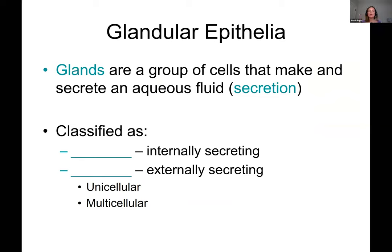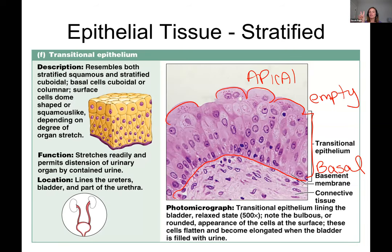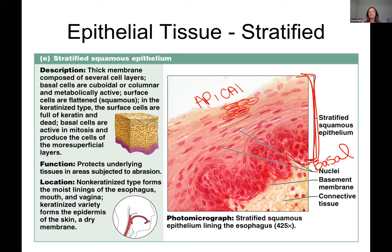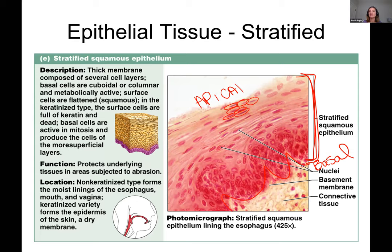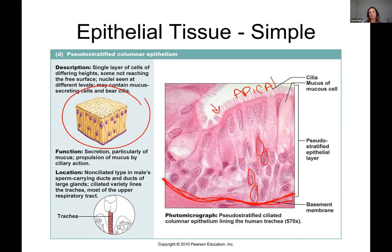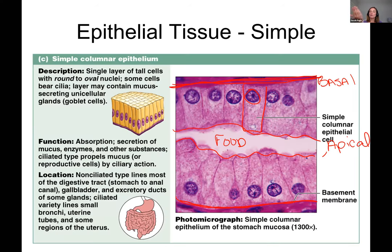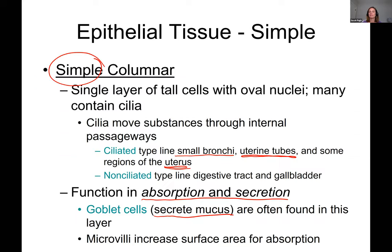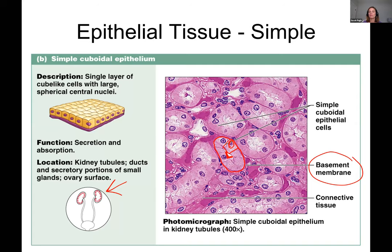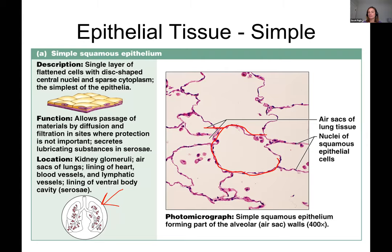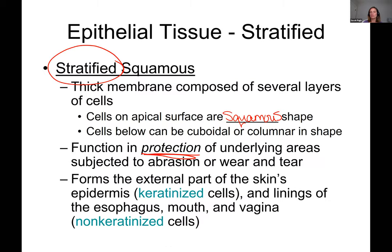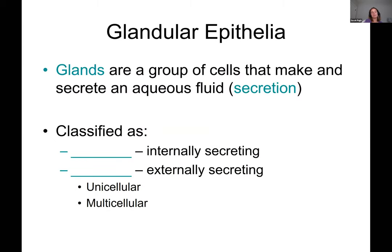Scrolling back through the images, naming is straightforward: stratified squamous is multiple layers with flat surface cells; pseudostratified doesn't follow normal rules; simple columnar is one layer of column-shaped cells; simple cuboidal is one layer of cube-shaped cells; simple squamous is one layer of flat cells. Remember, epithelium is not only a covering or lining — it also makes the glands of the body. Glands are cells that secrete an aqueous fluid or secretion.